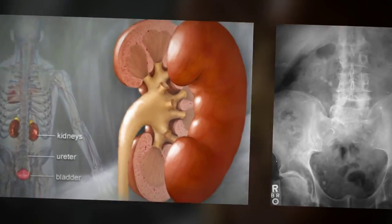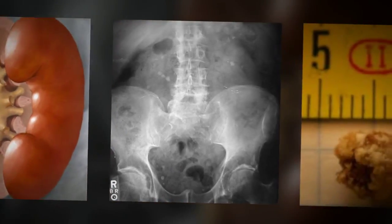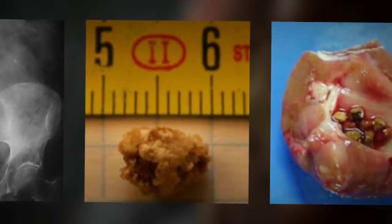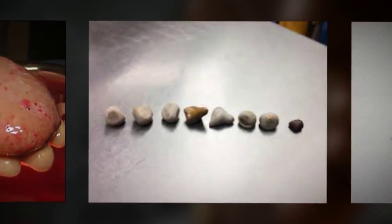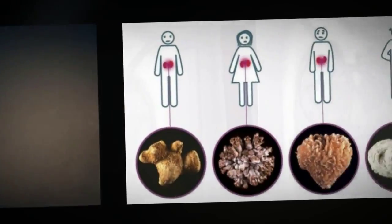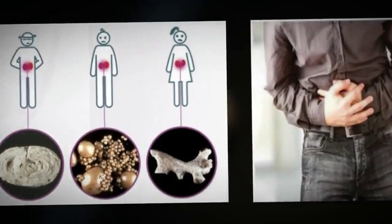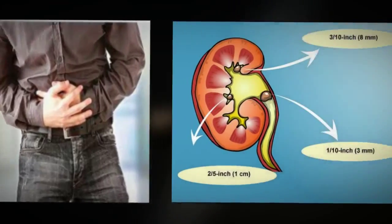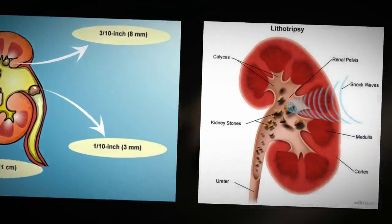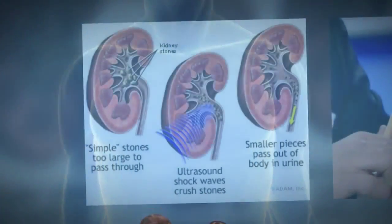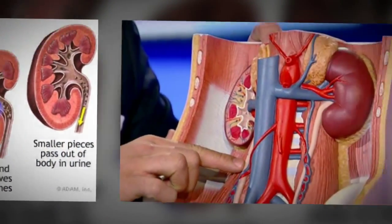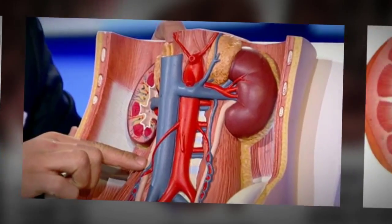Kidney stones, also called renal calculi, are solid concretions or aggregations of crystals of dissolved minerals in urine. The calculi form inside the kidneys or bladder. The most common types are composed of calcium oxalate crystals. Other types include struvite, magnesium ammonium and phosphate, uric acid, calcium phosphate, and cysteine.